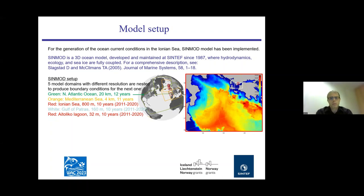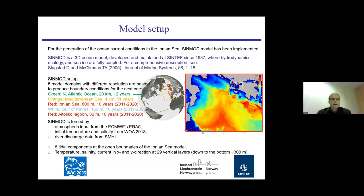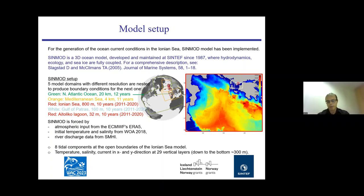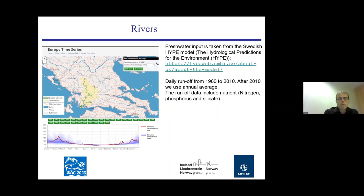The Gulf of Patras is modeled at 100–160 meter resolution, and finally we are going to simulate the Italico lagoon at 32-meter resolution. SINMOD is forced by the atmosphere with ERA5 data, initial temperature from the World Ocean Atlas, river discharge, tides on the open boundary, and temperature, salinity, and currents in all vertical layers on the boundaries of the Ionian Sea domain. Rivers are taken from the Swedish HYPE model, which contains daily runoff data from 1980 to 2010.